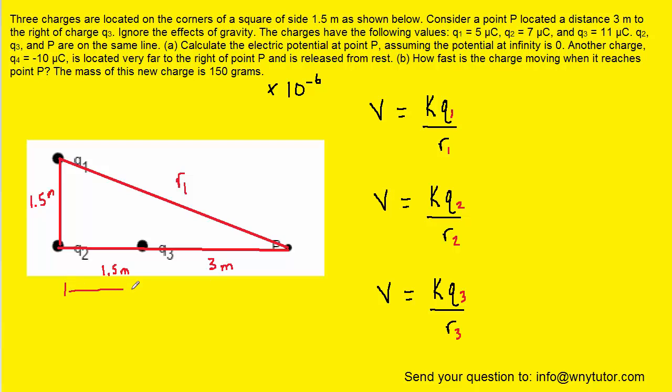Notice that the total length of the bottom side of the right triangle is 4.5 meters. So we can easily use Pythagorean theorem to get the value of R1. And when we do so, we get a value of approximately 4.74 meters. So this will be the value for R1, the distance from Q1 to point P.